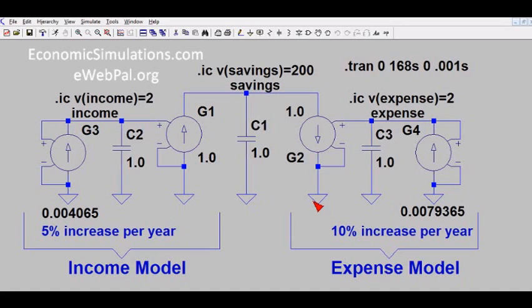Now he figures that his income is going to increase at a rate of 5% per year, but he's concerned about inflation. He thinks inflation may increase and eat up his savings. So he wants to model a 10% increase per year in expenses to see what inflation is going to do to his savings over time.